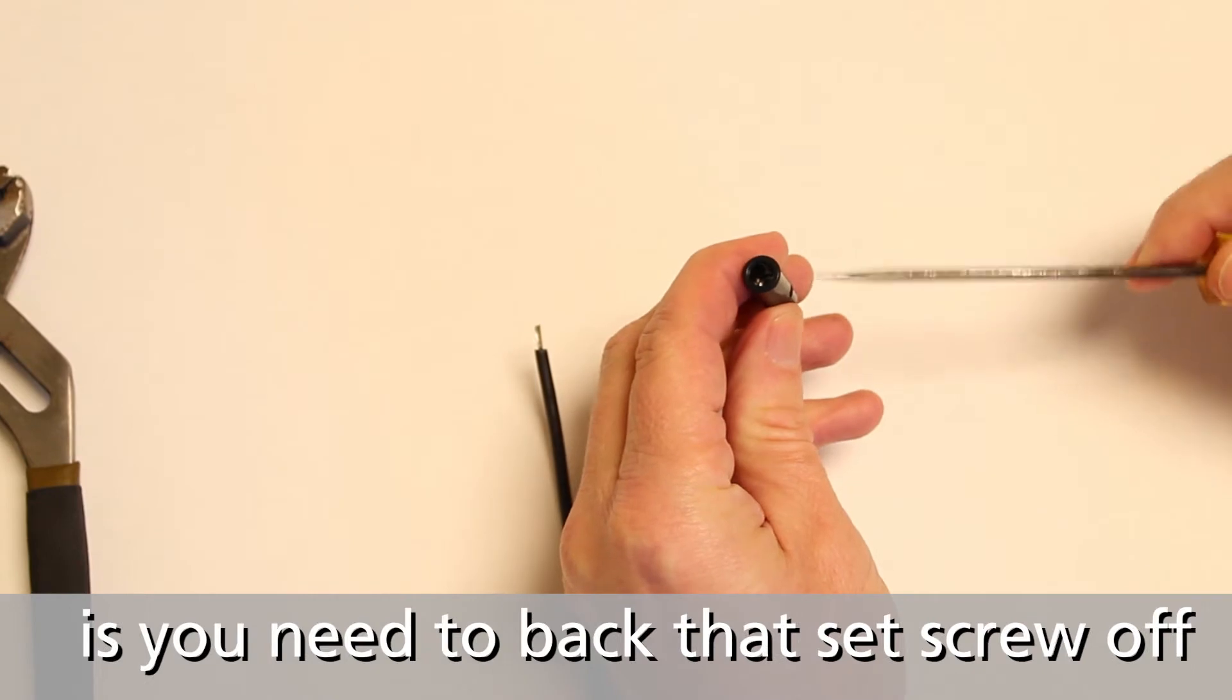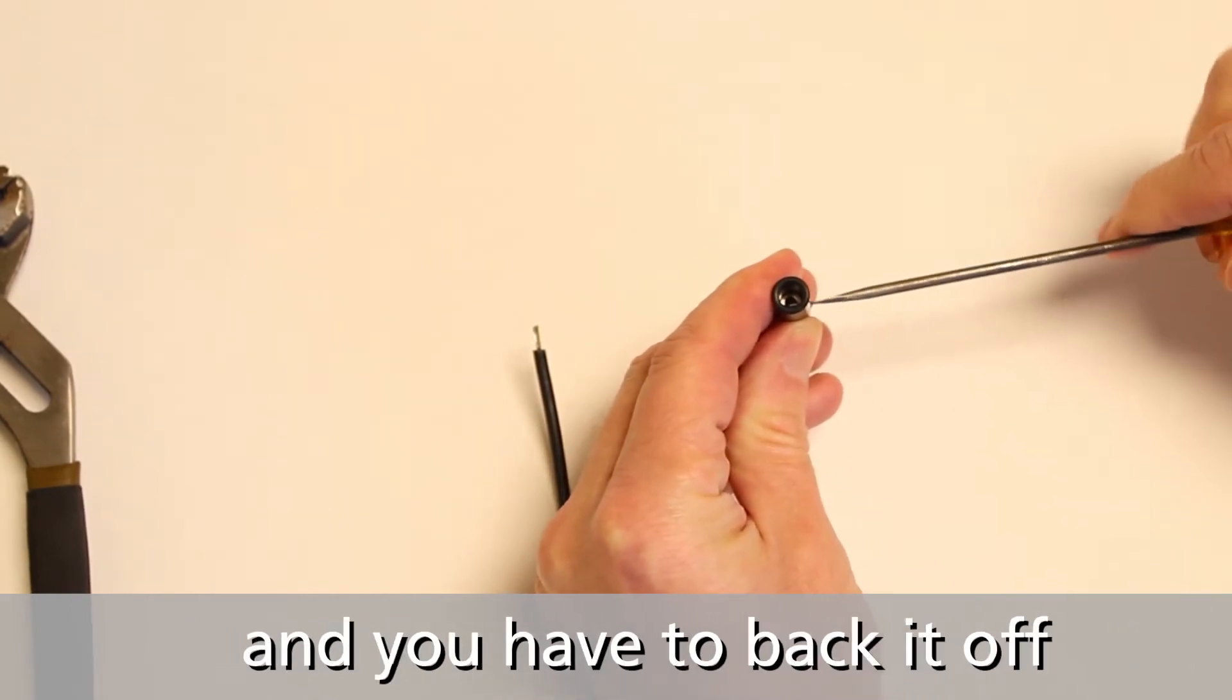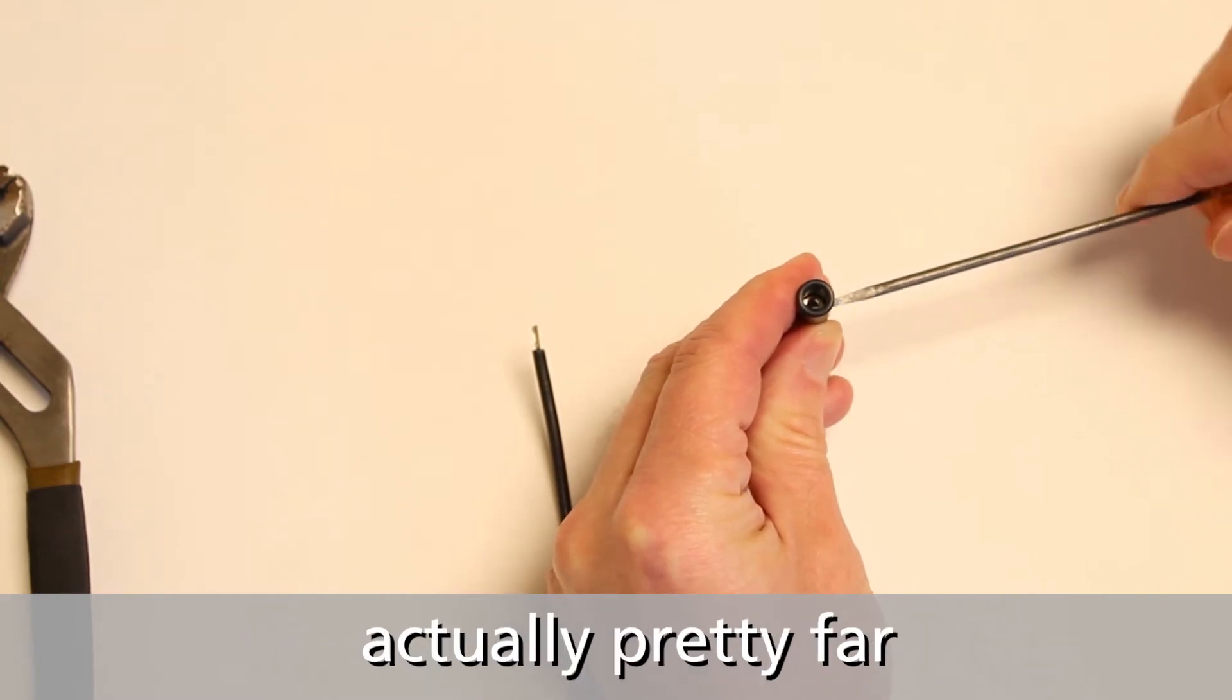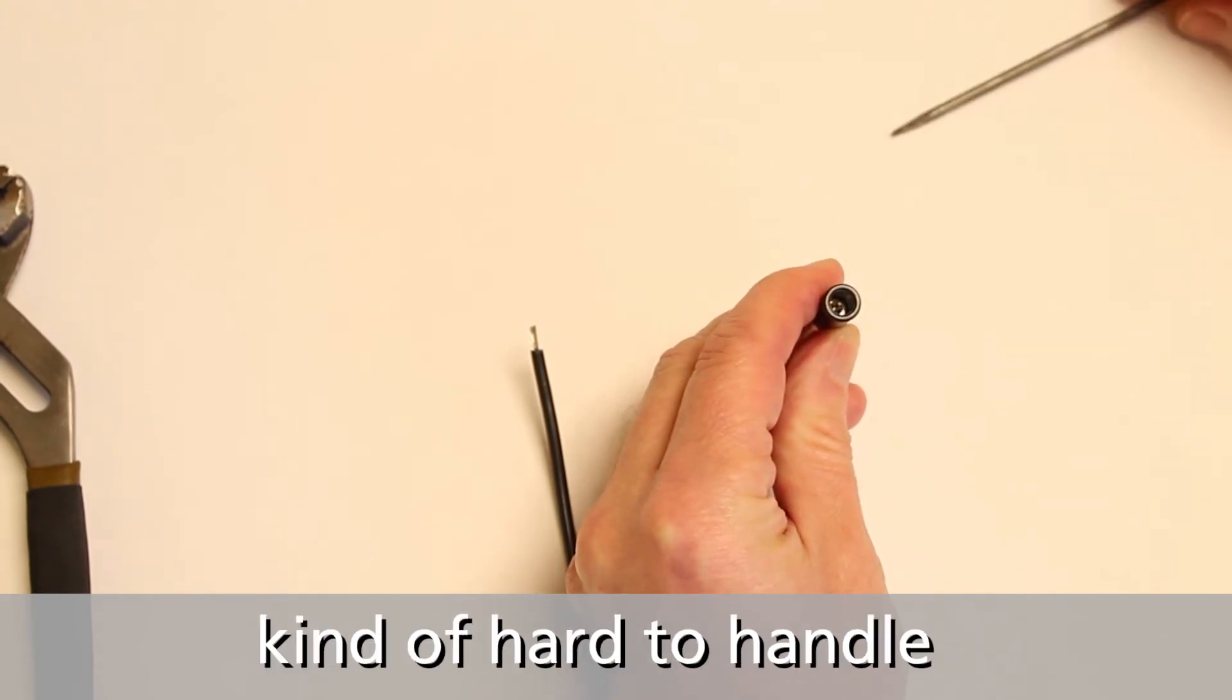What you need to do is back that set screw off, and you have to back it off pretty far when you do this. Don't take it all the way out because that little set screw is kind of hard to handle.